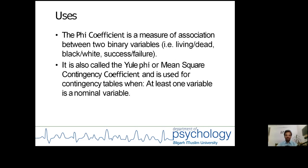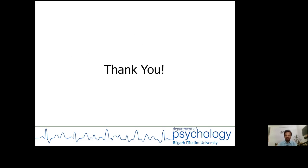The phi coefficient is a measure of association between two binary variables, for example: living or dead, black or white, success or failure. It is also called the Yule's phi or mean square contingency coefficient and is used for contingency tables when at least one variable is a nominal variable. Thank you.